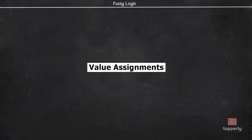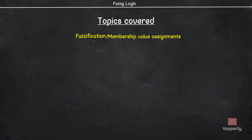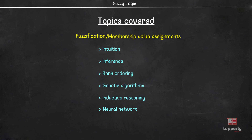Hey everyone, welcome back to Fuzzy Logic Lectures. In this video, we will learn about fuzzification, specifically how to develop membership functions that describe fuzziness. This assignment process can be intuitive or it can be based on some algorithmic or logical operators. There are 6 general methods developed to assign membership values to fuzzy variables. Of these, we will learn about intuition and inference in this lecture.